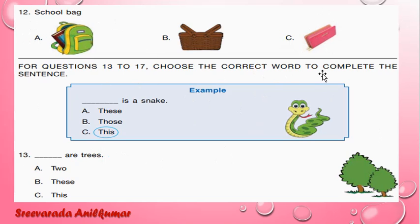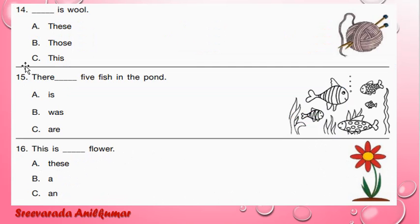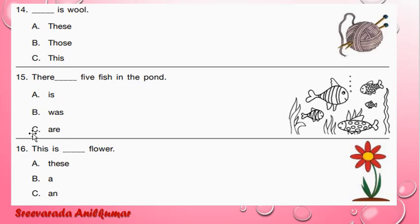Choose the correct word to complete the sentence. Dash are trees — the correct answer is 'These are trees.' Fourteenth one: Dash is wood — the correct answer is 'This is wood.' C is the correct option. Fifteenth one: There dash five fish in the pond — the correct answer is 'There are five fish in the pond.'